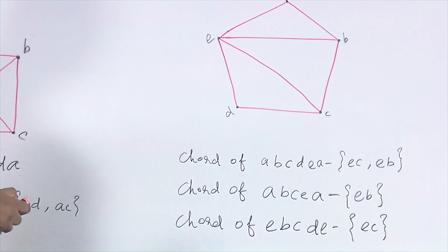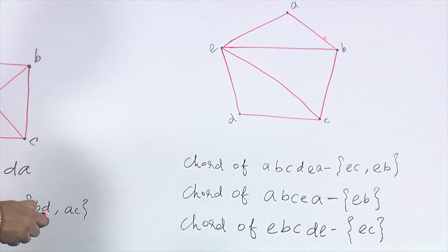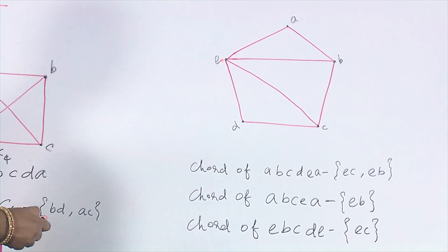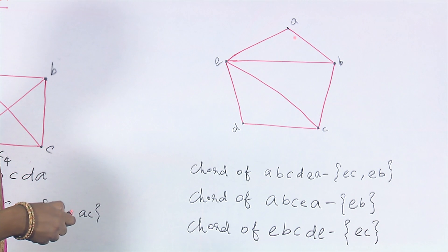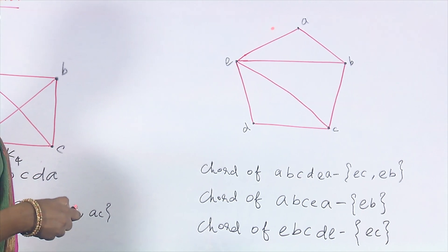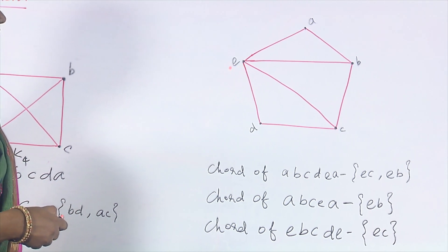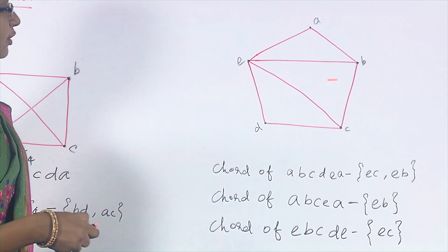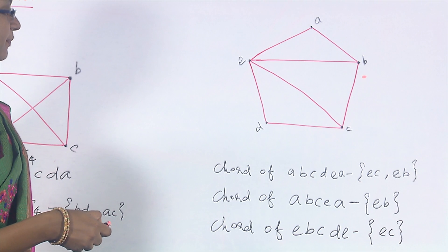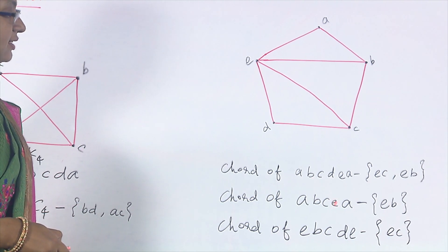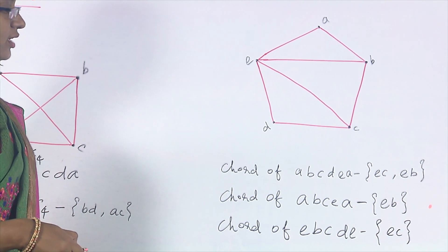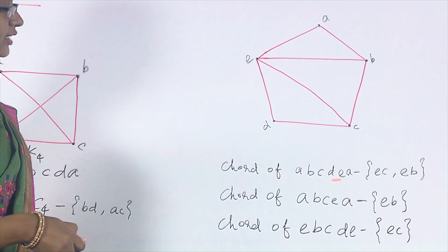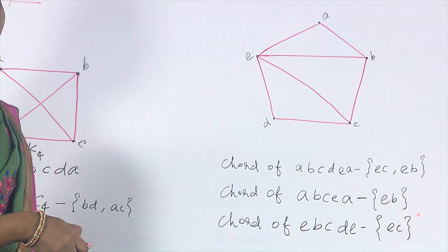One cycle of length 4 is A, B, C, E, A. Here we have one chord called E–B. So the chord of the cycle A, B, C, E, A is E–B. This is a cycle of length 4 and the chord is E–B.